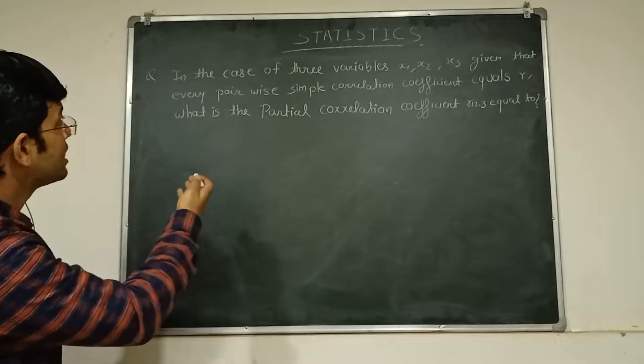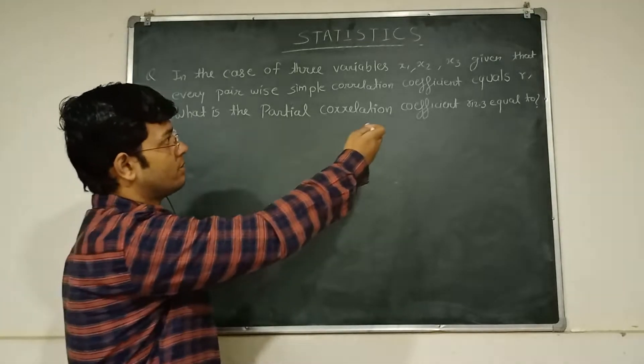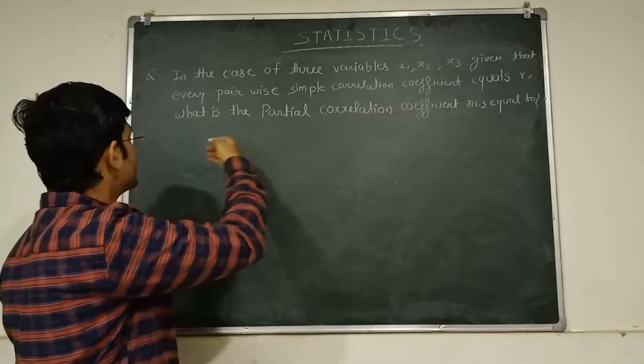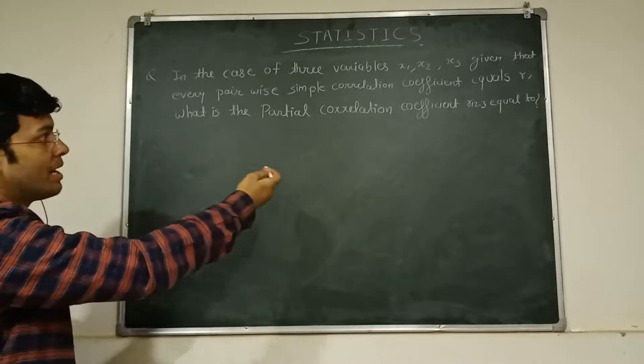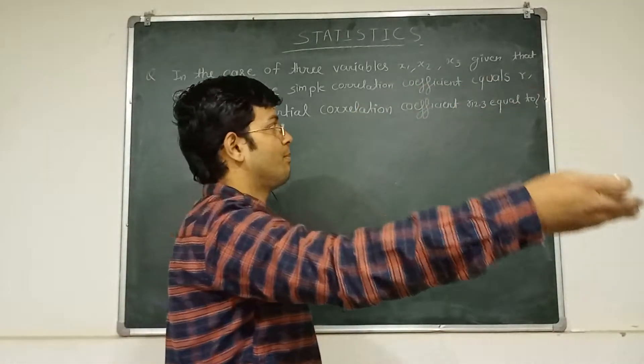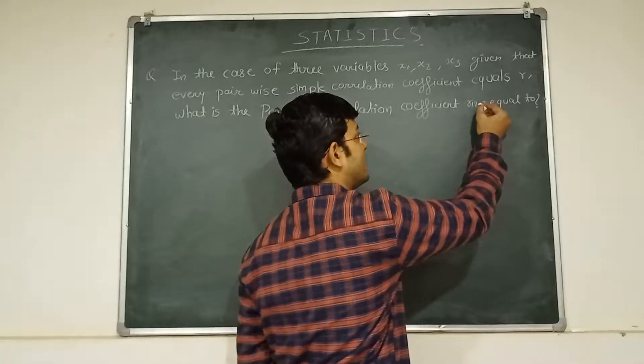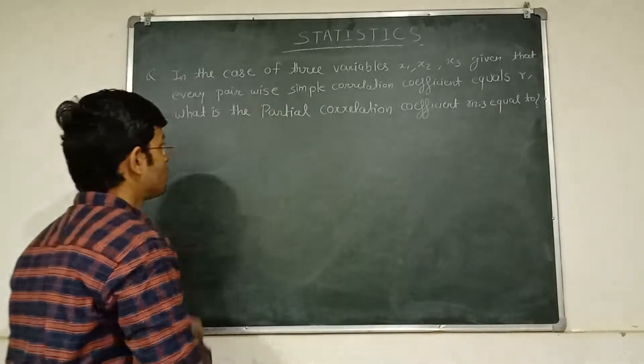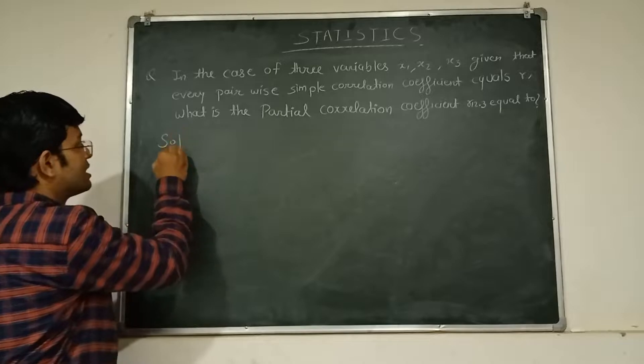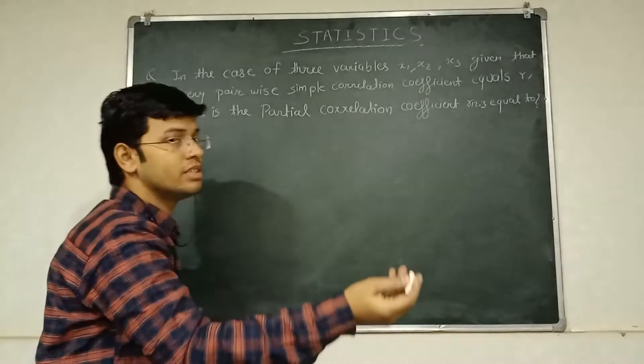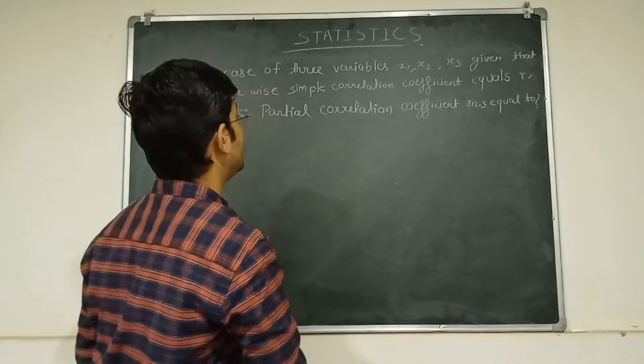In the case of three variables, x1 has to be given. When simple correlation coefficient equals R, what is the partial correlation coefficient R12.3 equal to? So how do we do this? What is the partial correlation coefficient?